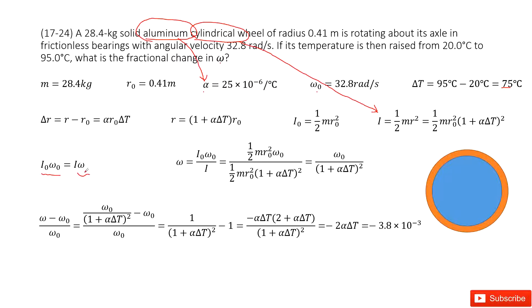And the rotational momentum is i times omega. i₀ times ω₀ equals i times ω. So now we look at i₀. Can we find it? Yes, one half mR₀ squared. Now ω₀ is given.